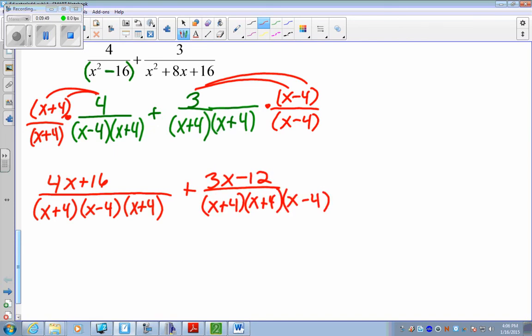Let's combine our numerators. We have 4x plus 3x is 7x. We have 16 plus negative 12, which is positive 4. So, plus 4. And, the denominators. x plus 4. We have two of them. So, you technically could do x plus 4 squared. Times x minus 4.